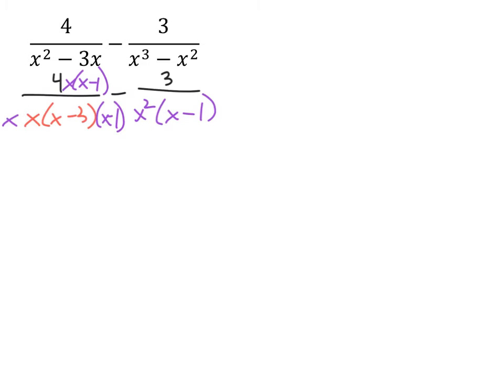So let's look at this term on the right, we have x squared and x minus 1. So it already had two x's, so we don't need to multiply it by another x, but it doesn't have an x minus 3, so we're going to have to multiply this by x minus 3, in both the numerator and denominator.